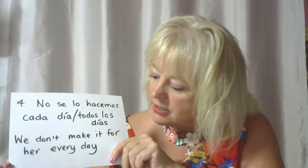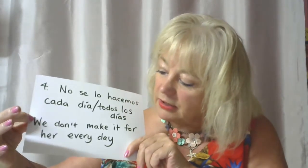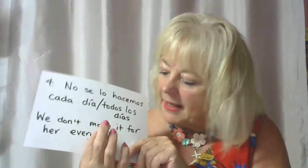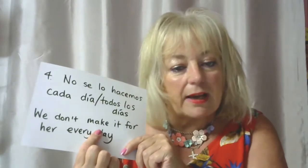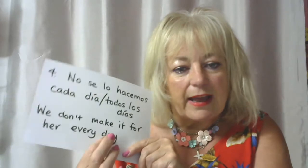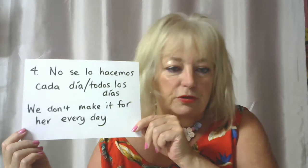Number four: We don't make it for her every day. No se lo hacemos cada día or todos los días. Breaking it down: 'We' — the subject; 'don't' — negativo, verbo auxiliar; 'make' — verbo principal; 'it' — pronombre directo; 'for her' — pronombre indirecto; 'every day' — cada día.